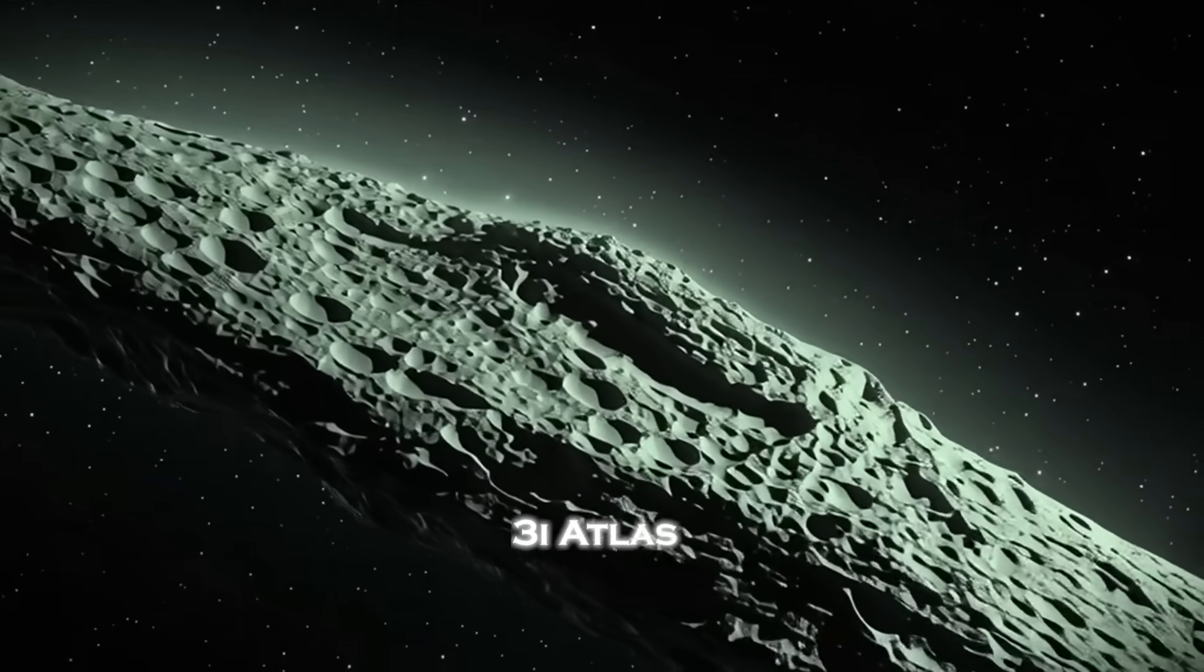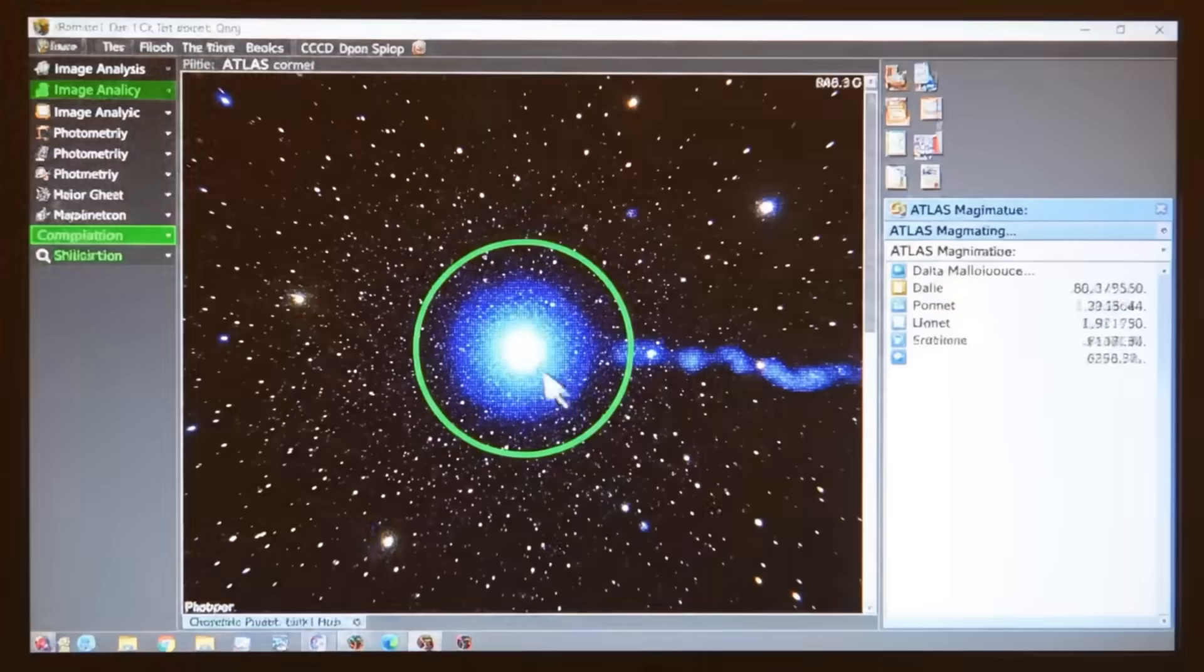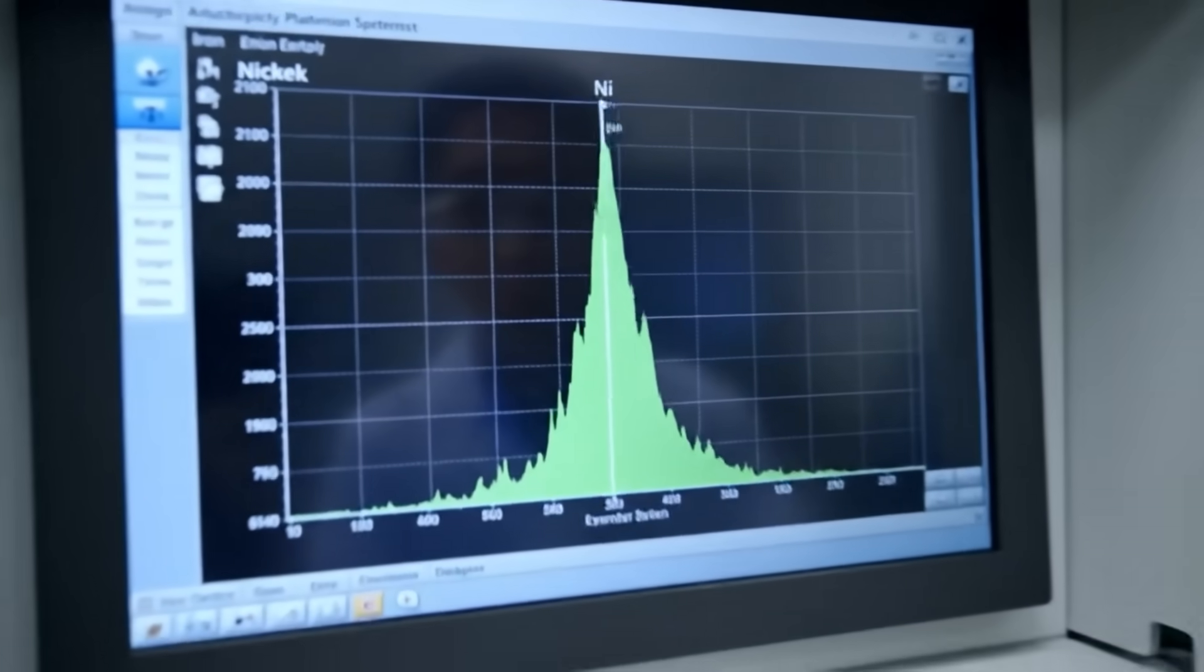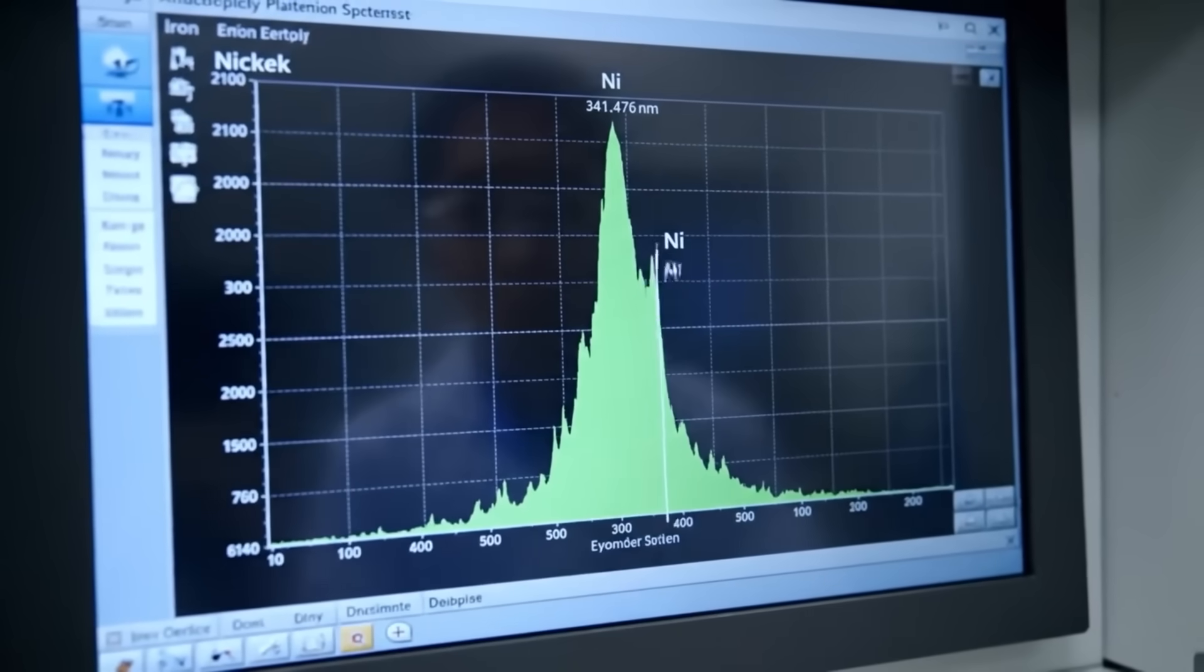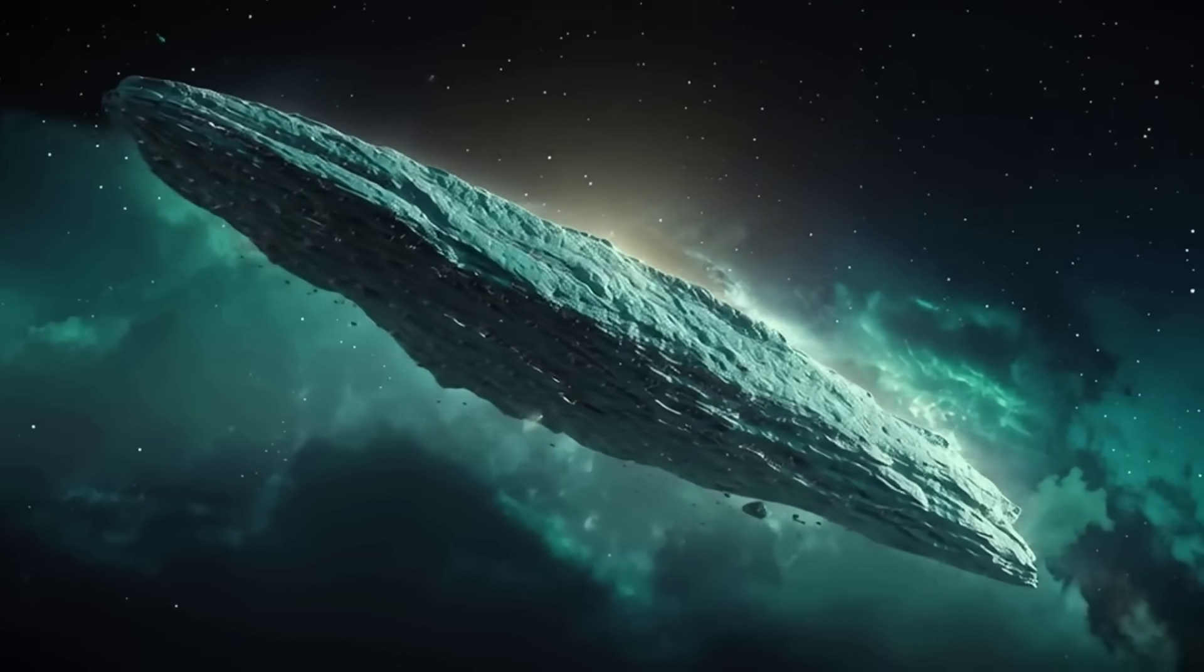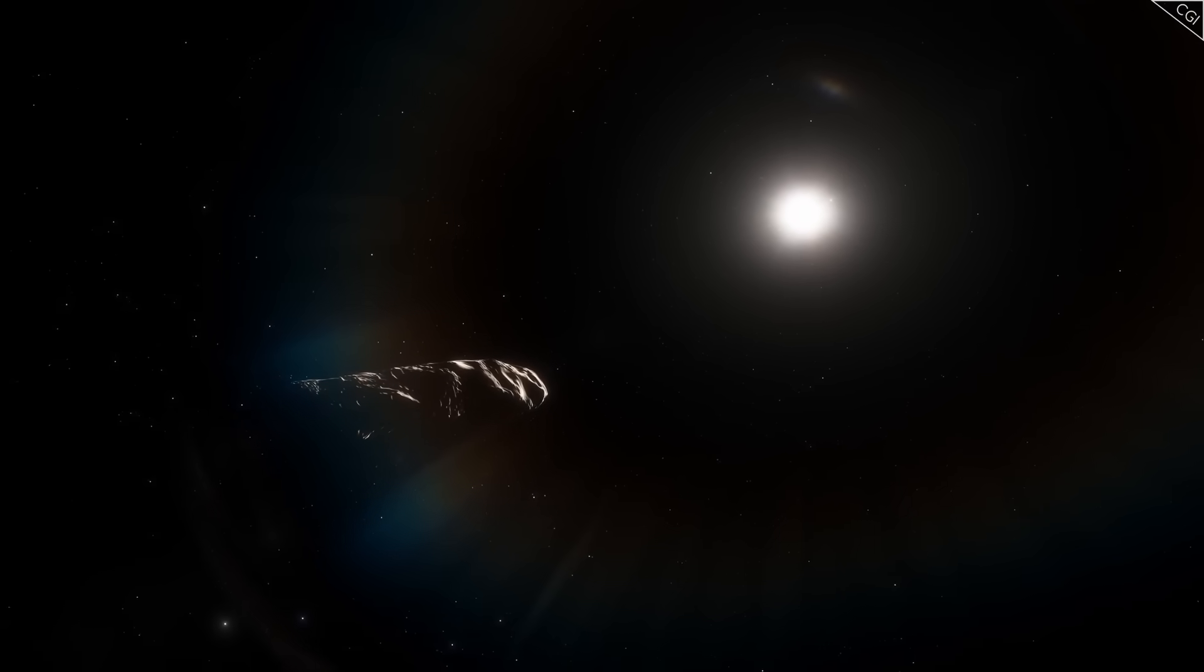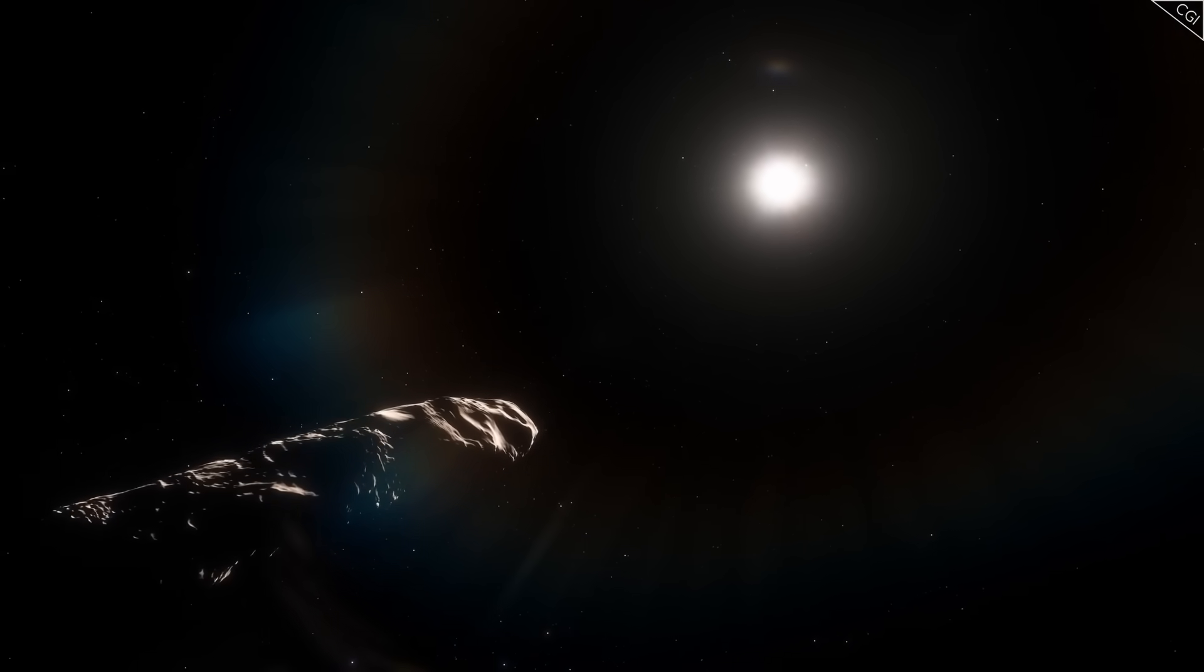Because new images of interstellar object 3i Atlas, released quietly on November 5th by the Virtual Telescope Project, have confirmed what scientists feared ever since the first anomaly appeared months ago. This object is not slowing down, it's speeding up. It's accelerating through the solar system as though gravity applies to everything except itself.